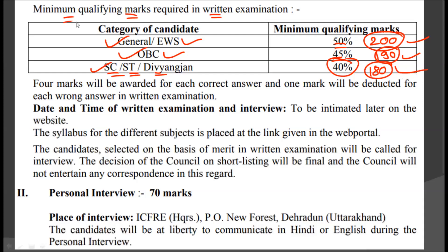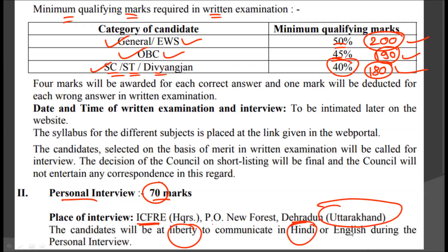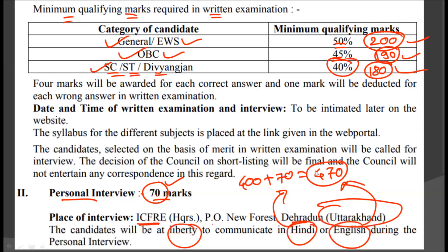Once you get the minimum qualifying marks and fit into the merit list, you will be called for the personal interview, which is of 70 marks. The place of interview is the ICFRE headquarters in Dehradun, Uttarakhand, and candidates are given the liberty to communicate in Hindi or English during the personal interview. The personal interview is of 70 marks, making the total examination marks 470 marks (400 + 70). Out of these 470 marks, merit will be calculated and the top students will be selected for this Scientist B position.